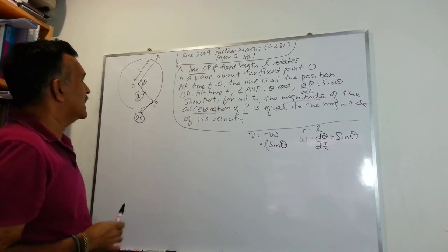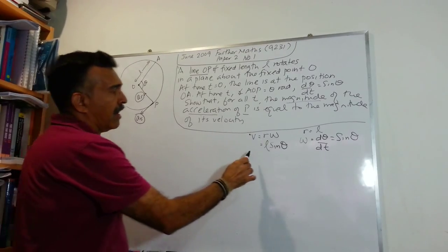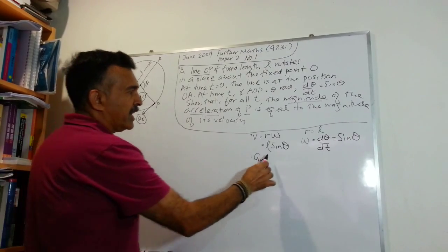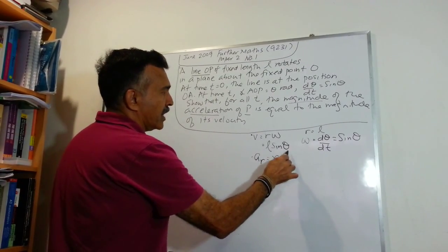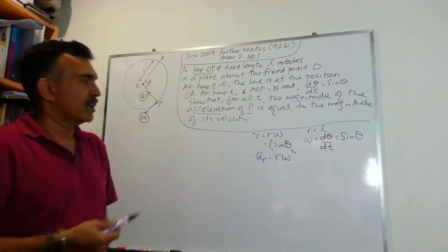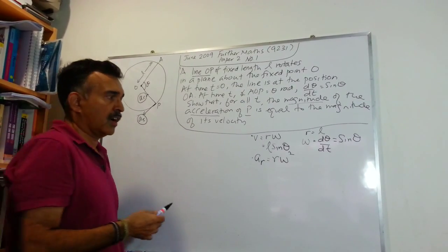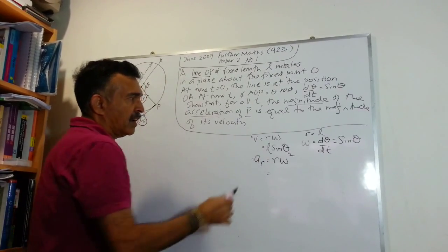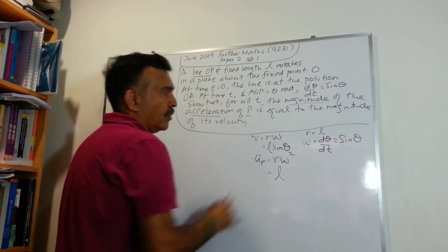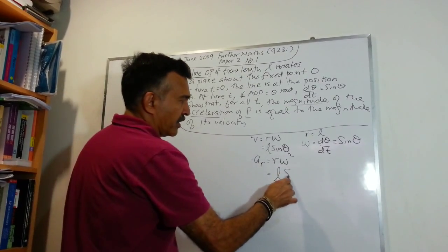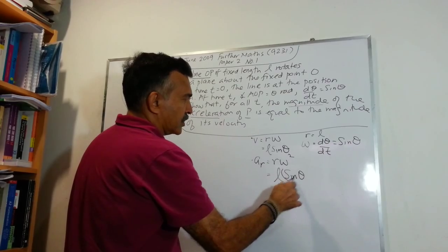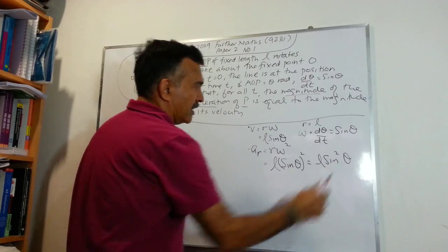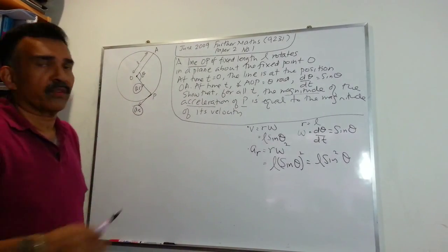Now let's find the radial component A_r. It is given by the formula rω². Plugging in r equals L and ω equals sin θ, we get A_r equals L sin²θ. So we now have the radial component.